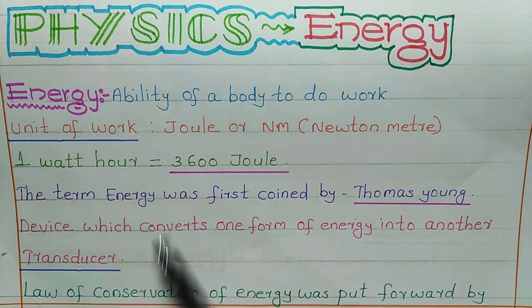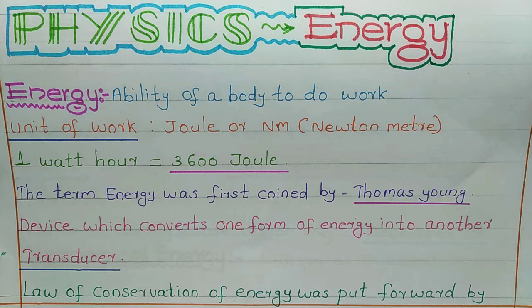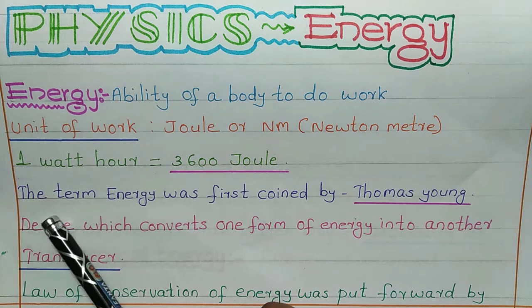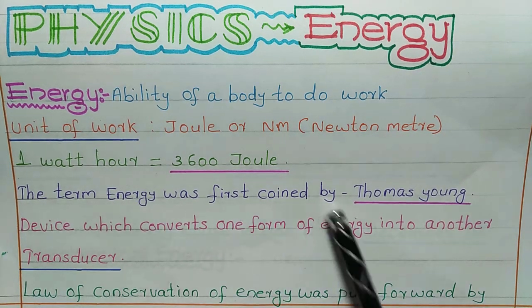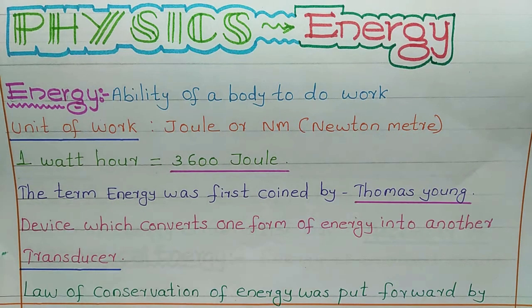One watt-hour is equal to 3600 joules. The term energy was first coined by Thomas Young — he is the scientist who coined the term energy.